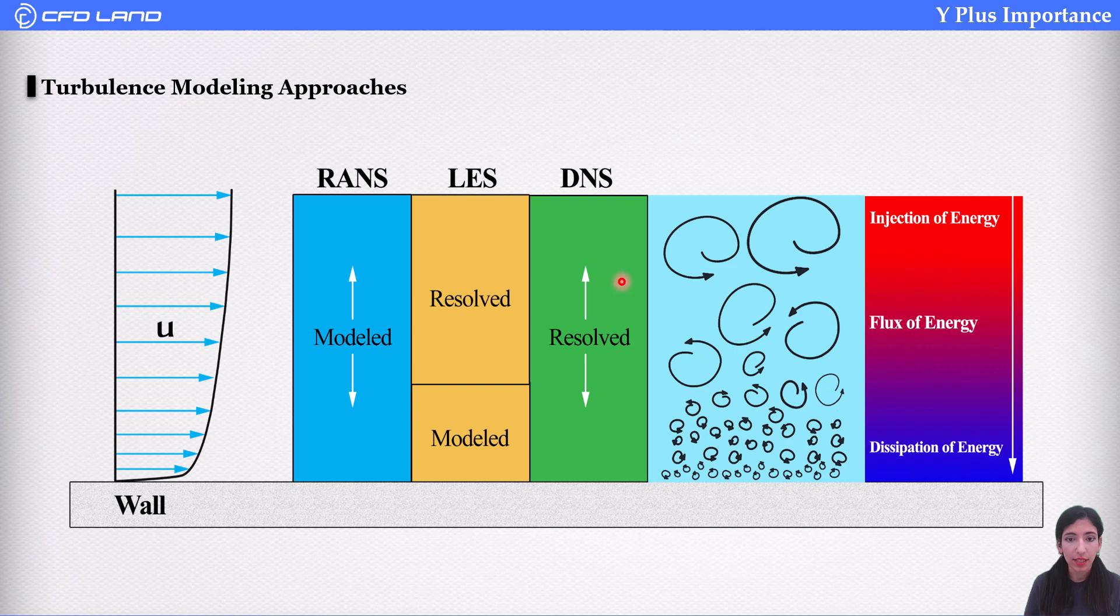In a DNS model, as I said, we resolve all of the eddies. So our mesh is really fine, but computationally costly and expensive. In LES, large eddy simulation, we can capture large eddies but we model small eddies. And in RANS, we model. So by modeling, we mean that we take into consideration their effect. We do not model the eddies themselves. No, we take their effect into consideration.